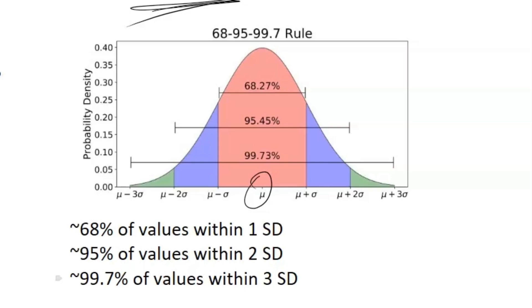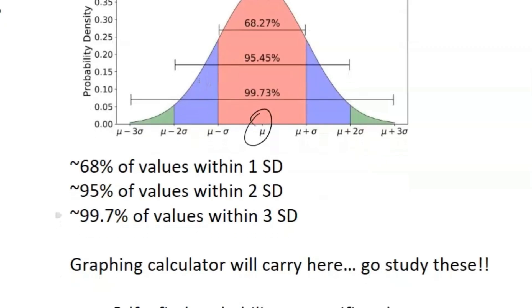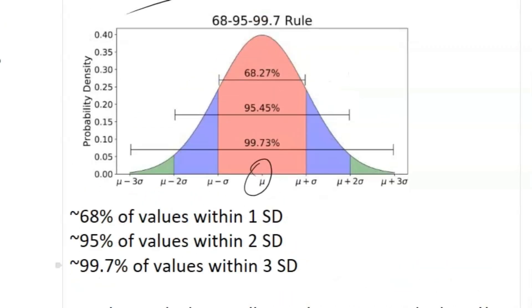95% of the values are within two standard deviations of the mean. And 99.7% of the values are within three standard deviations of the mean.